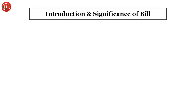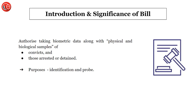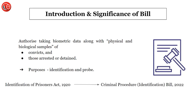Coming to the first part — the introduction and significance of this bill. This bill will authorize our agencies to collect the biometric data of any convict, or any person who is arrested or detained. Biometric data along with physical and biological samples can be taken. The main purpose will be identification and investigation — data will be collected for these purposes.